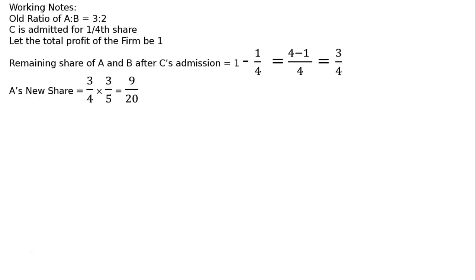That is, A's new share: three-fourth multiplied by 3 upon 5 for A and 2 upon 5 for B. Hence, A's new share is 9 upon 20. B's new share is 6 upon 20. C's new share is equal to one-fourth.